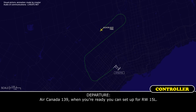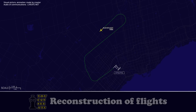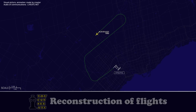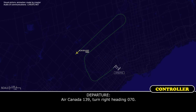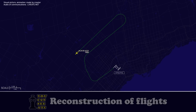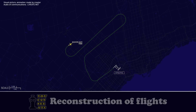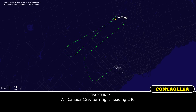Air Canada 139, when you're ready, you can set up for runway 15L. We check, 15L, Canada 139. Air Canada 139, turn right heading 070. Right heading 070, Canada 139. Air Canada 139, turn right heading 240. Right heading 240, Canada 139.